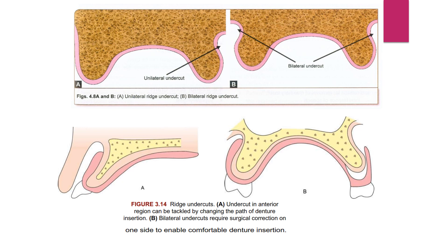The pictures show ridge undercuts: a unilateral undercut and a bilateral undercut. The undercut in the anterior region can be managed by changing the path of denture insertion. Small ridge undercuts from the ridge crest and undercuts only in the anterior labial region do not require surgical intervention — only a change in the path of denture insertion. However, bilateral undercuts require surgical correction on at least one side to enable comfortable denture insertion.